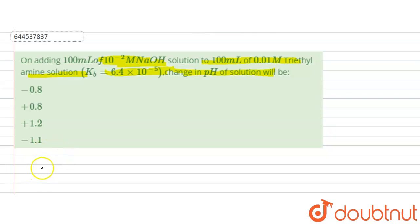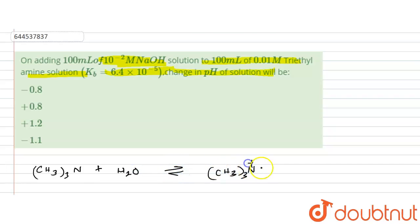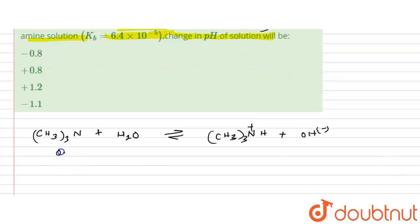Before adding NaOH, we only have triethylamine. The reaction is: (CH₃)₃N + H₂O ⇌ (CH₃)₃NH⁺ + OH⁻. The concentration is 0.01 molar. At t = 0, triethylamine is 0.01 and products are 0. At equilibrium, triethylamine is 0.01 − x, and both (CH₃)₃NH⁺ and OH⁻ are x.